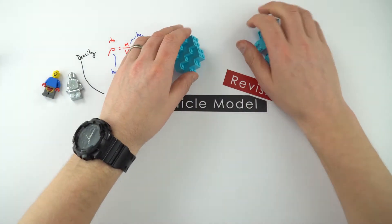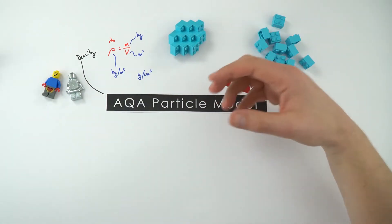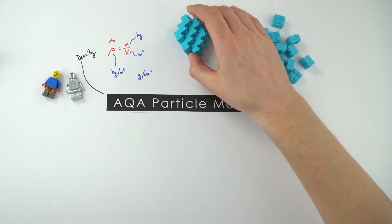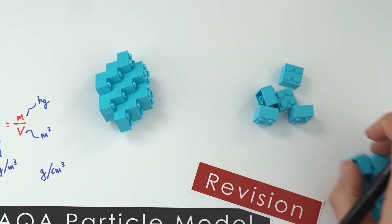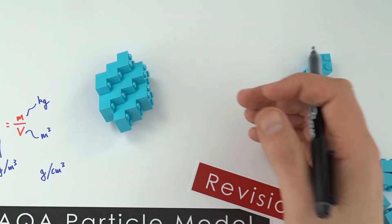The particle model allows us to look at solids, liquids, and gases. If we think about the behaviour of the individual particles or molecules, this explains why certain things have certain properties. So I'm going to consider solids, liquids, and gases.